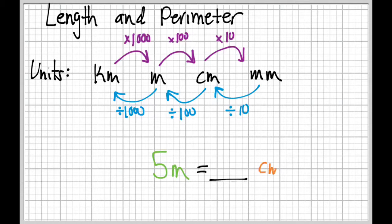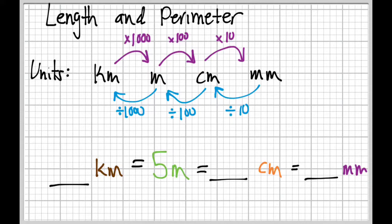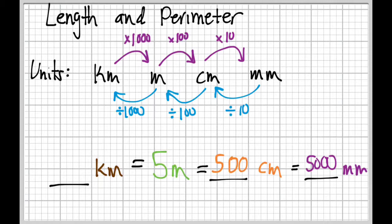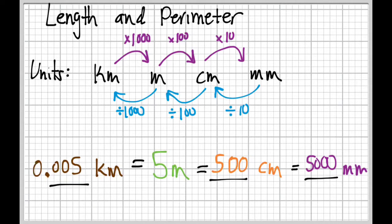So let's look at an example. If we have 5 meters, let's figure out what that is in centimeters, millimeters, and also in kilometers. To get it in centimeters, from meters to centimeters we're going to multiply by 100. So we take the 5 and multiply by 100 — we just add two zeros, moving the decimal place two places to the right — so 500 centimeters. To find it in millimeters, we multiply the centimeters by 10, so we add another zero: 5,000 millimeters. To go from meters to kilometers, we divide 5 by 1,000. The decimal point is at 5.0, and we move it three places to the left, filling the blank spots with zeros, giving us 0.005 kilometers.